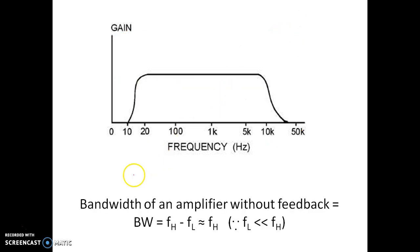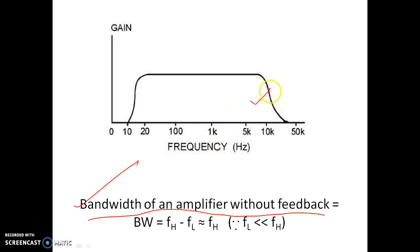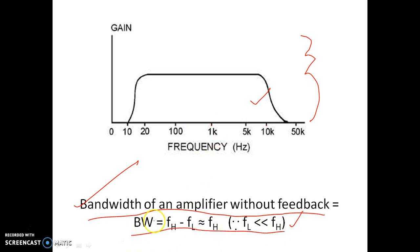So the bandwidth of an amplifier without feedback is approximately FH. This is without feedback. This applies in general — for any amplifier, whether CE or any other configuration, if you check the Bode plot, you will see that the higher cut-off frequency is very much larger than the lower cut-off frequency. So this assumption is applicable for any amplifier: bandwidth equals FH minus FL, which is approximately equal to FH, because FL is very much less than FH.